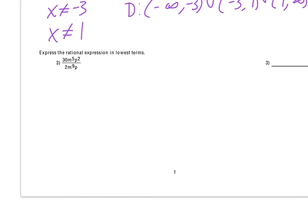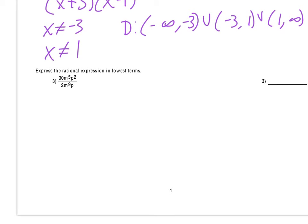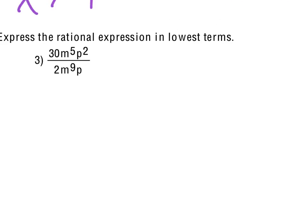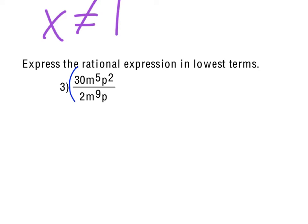Looking at number 3 here, really just reducing down the monomial terms that we have. So if we look at that, the 30 over 2 would reduce down to just 15. That would end up on the top of our fraction.